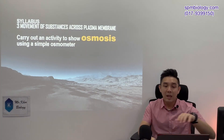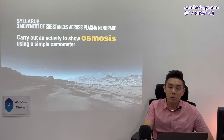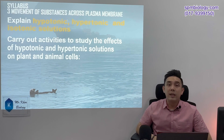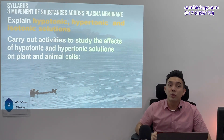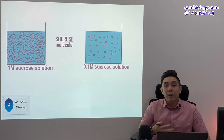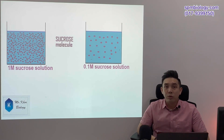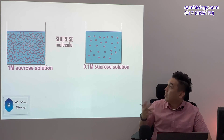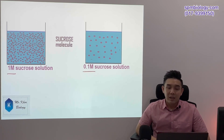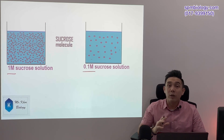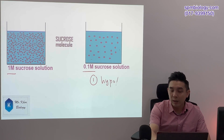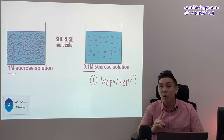The first thing to understand for osmosis would be the three main types of solution: hypotonic, hypertonic, as well as isotonic. In an exam, they'll normally give you two concentrations of solution — for example, a 0.1 mole sucrose solution as well as a 1 mole sucrose solution. Your job is to first determine which is hypotonic and which is hypertonic.